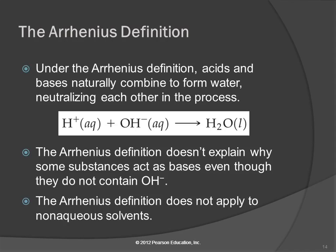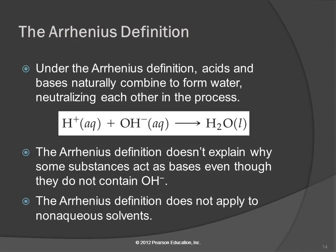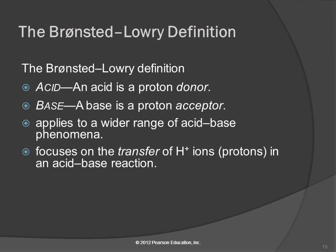An acid forms hydrogen ions, and we didn't write the water molecule it's piggybacking on, but we understand it's being held by something. The hydrogen ion produced by the acid and the hydroxide ion produced by the base will make a water molecule when combined. This is how acids and bases neutralize each other and form water — the net ionic equation for acid-base neutralization reactions. However, some substances act as bases even though they don't have hydroxide ions, and the Arrhenius definition doesn't account for those. It also doesn't deal with non-aqueous solutions.